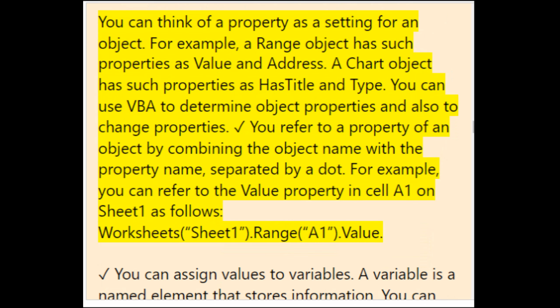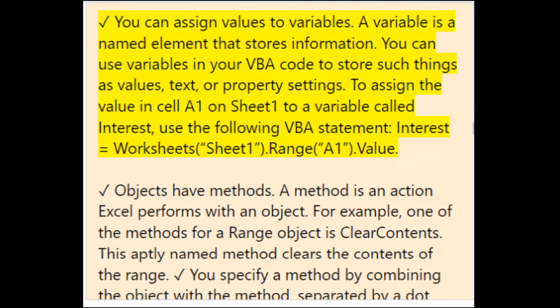A property is a setting for an object. For example, a Range object has properties like Value and Address; a Chart object has properties like HasTitle and Type. You can use VBA to determine and change object properties. You refer to a property by combining the object name with the property name separated by a dot — for example, Worksheets("Sheet1").Range("A1").Value.